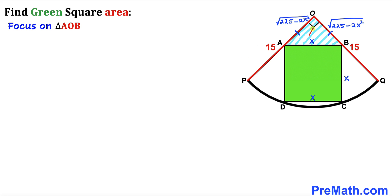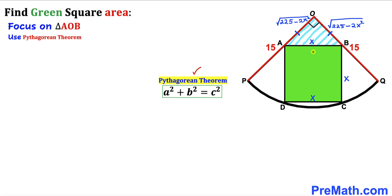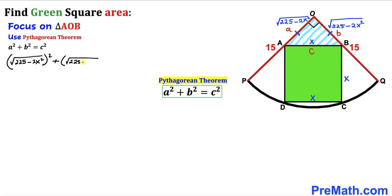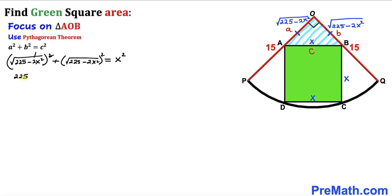Now let's focus on right triangle AOB and apply the Pythagorean theorem once more. Calling OA as side a, OB as side b, and AB = X as side c: [√(225 − 2X²)]² + [√(225 − 2X²)]² = X². The squares and square roots cancel, giving: (225 − 2X²) + (225 − 2X²) = X².